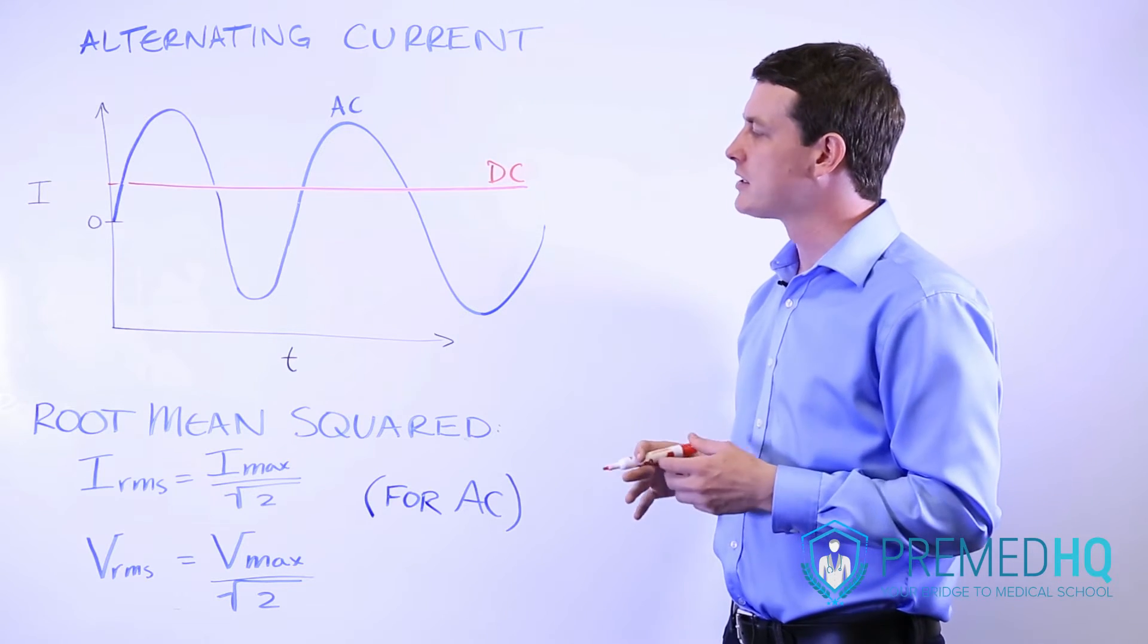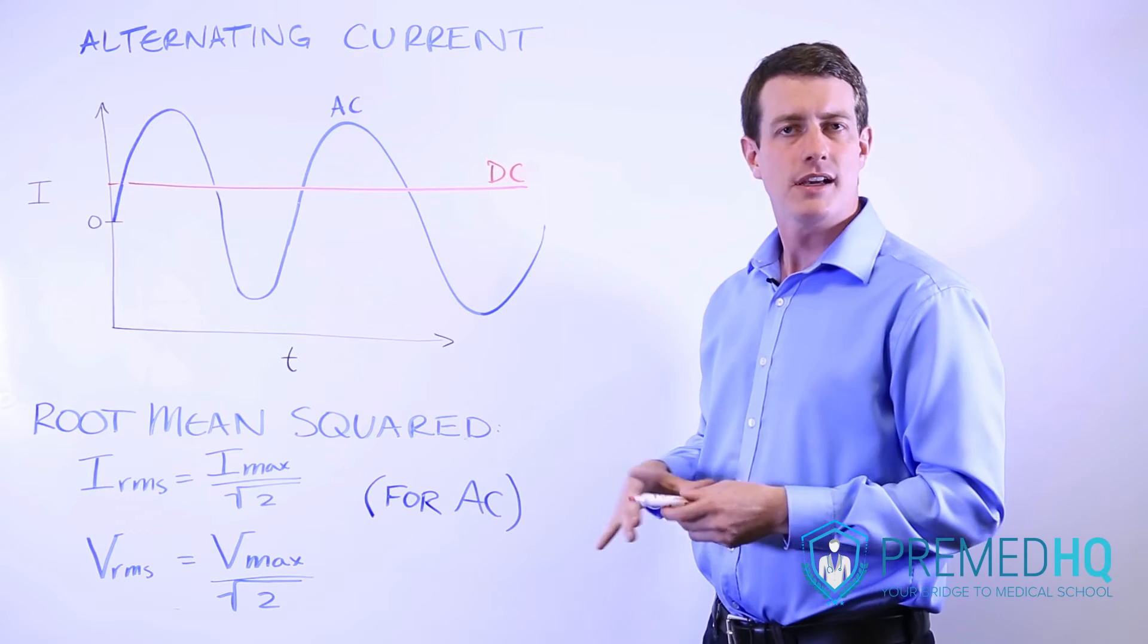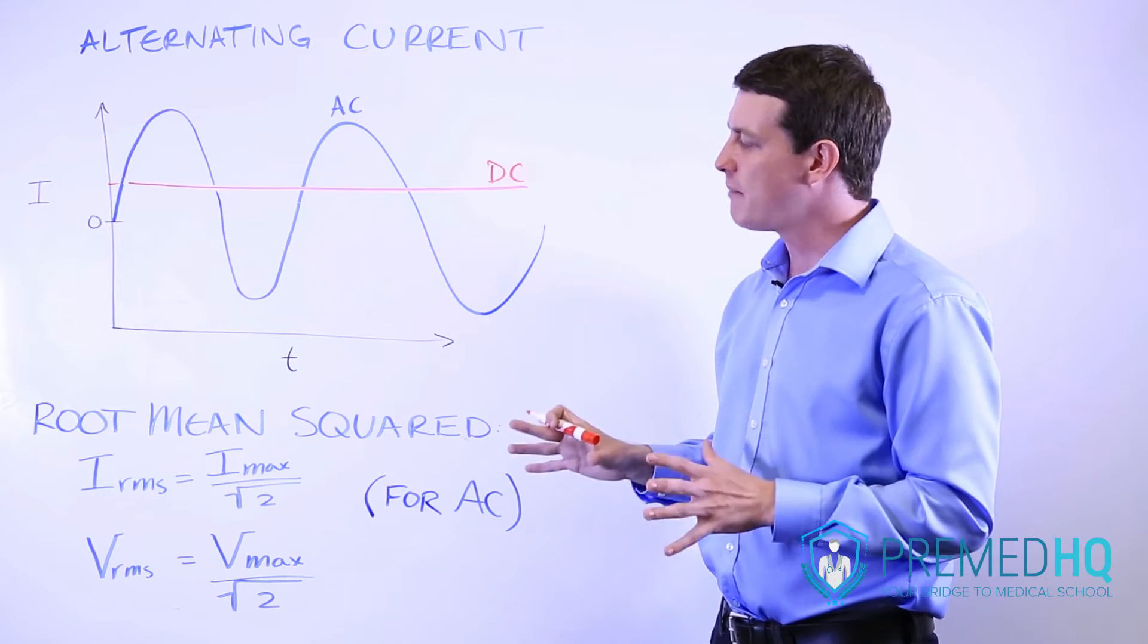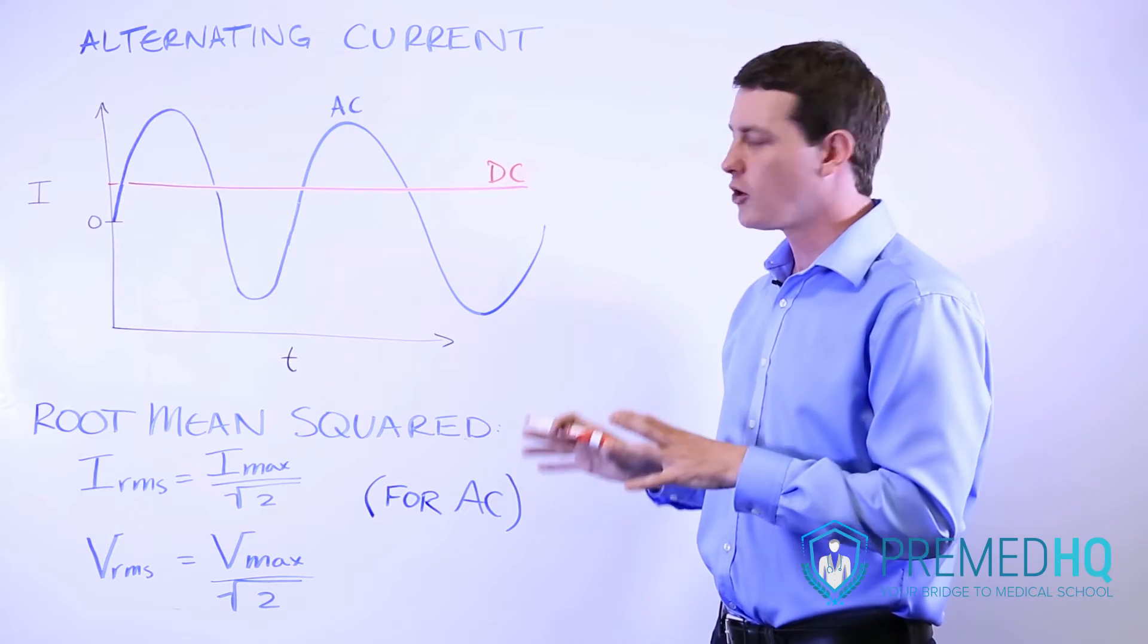And so what they developed was a concept called the root mean squared or RMS, and it's a really simple mathematical calculation that can be used to calculate the use of current or of voltage.